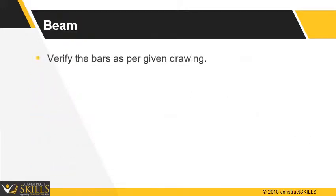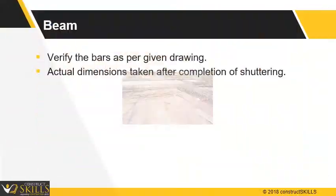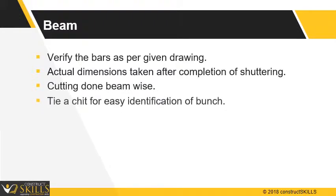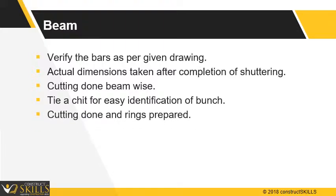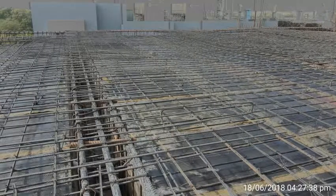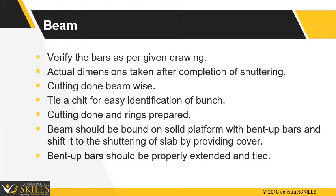For beams, verify the bottom bars, bent-up bars, and top bars along with ring details as per the given drawing. Preferably, actual dimensions should be taken after shuttering for bar cutting. Cutting should be done beam-wise. Tie a chit of paper for easy identification of the bunch. Then cutting should be done and rings should be prepared. The beam should be bound on a solid platform along with bent-up bars and shifted to the shuttering of the slab by providing proper cover. For continuous beams, bent-up bars should be properly extended and tied by binding wire.